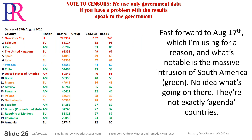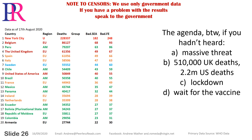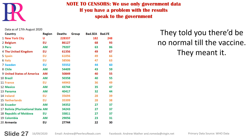Fast forward to August 17th, and what's notable is the massive intrusion of South America — green. No idea what's going on there; they're not exactly agenda countries. The agenda, by the way, if you hadn't heard: massive threat, 510,000 UK deaths, 2.2 million US deaths, lockdown, wait for the vaccine. They told you there'd be no normal till the vaccine. They meant it.